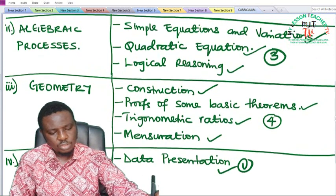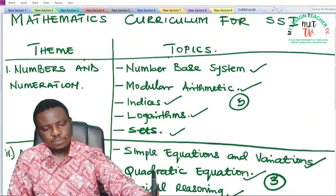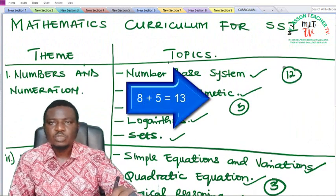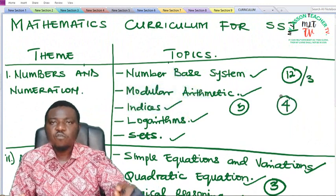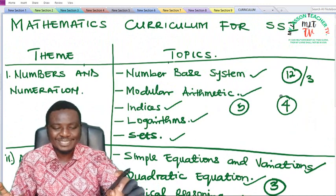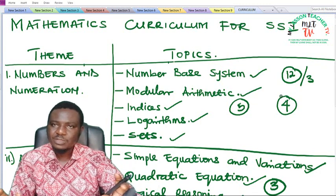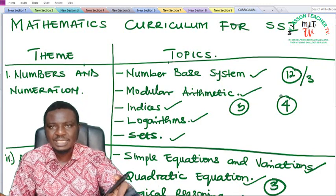So under these four themes, these are the topics you are expected to learn in SS1 — a total of 12 topics. If you divide 12 by 3 it gives you 4 broad topics per term. Most times it takes 2 to 4 weeks to treat a topic thoroughly, to the best understanding of every student in the class.